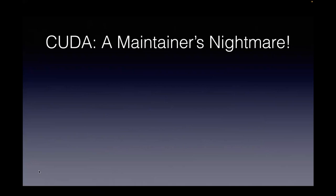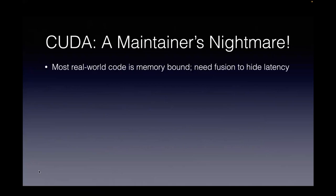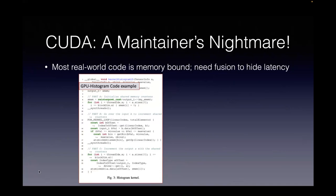The nightmare continues. In fact, this is a constant problem for a maintainer — someone given code written by somebody else who is supposed to maintain it. In the real world, most code you'll look at will actually be memory-bound. Compute on the GPU is constantly becoming faster, but memory is growing at a slower pace, so in most cases code is always waiting on memory.